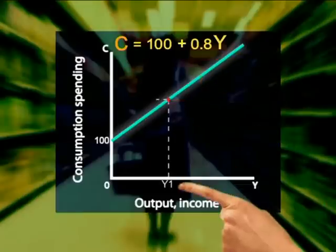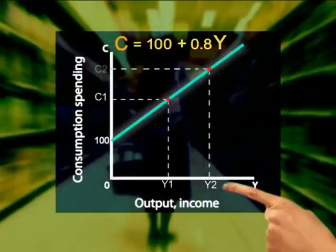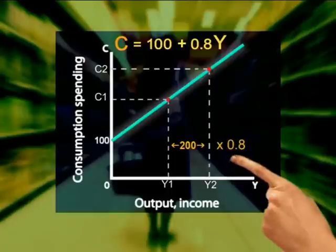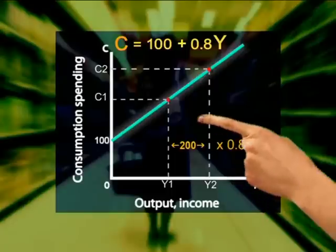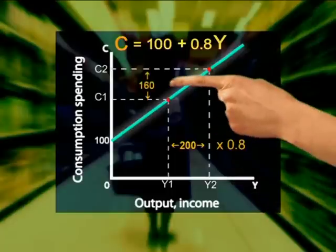So what happens to consumption spending if income increases by 200 from y1 to y2? Well, the increase in consumption spending is then 0.8 times 200, which is equal to 160.